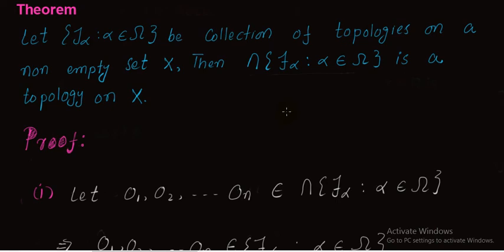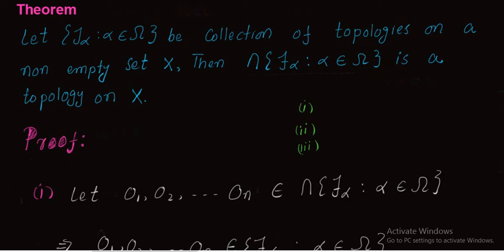We move to the proof of this theorem. We have to test three conditions for the topology. For the first condition, we will prove that the intersection of a finite number of members of this collection again belongs to the intersection τ_α (α ∈ Ω). For the second condition, we will prove that an arbitrary union of members of this intersection belongs to this set. For the third condition, we will prove that φ and X belong to the intersection τ_α (α ∈ Ω).